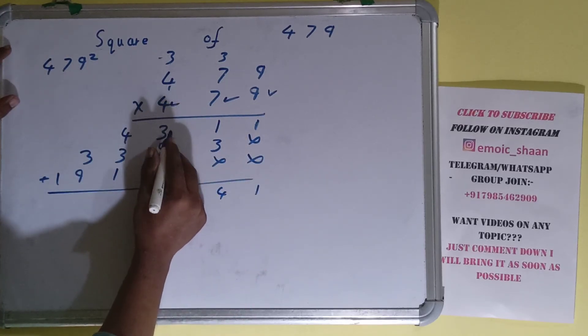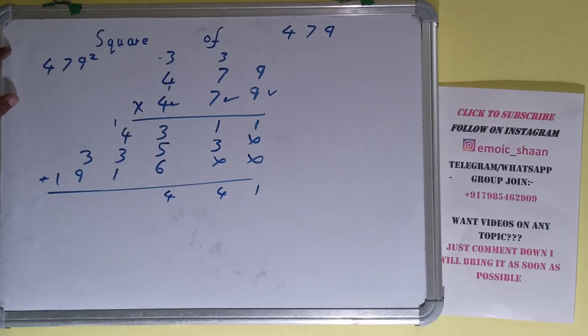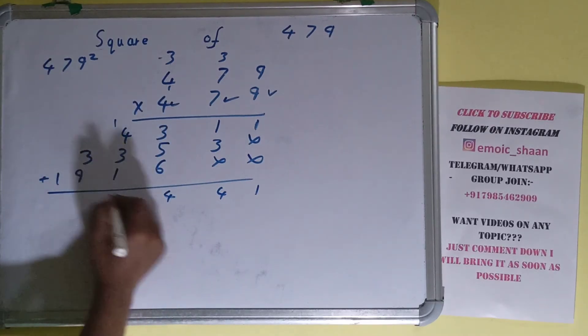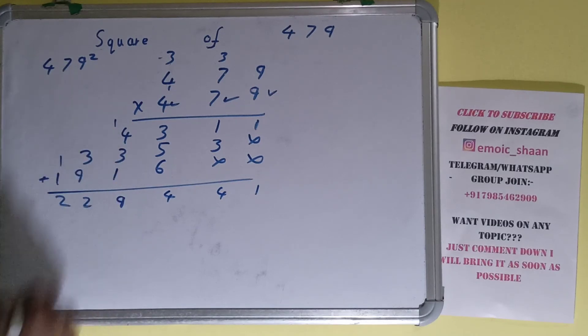6 plus 5 is 11, 1 here. 1 plus 4, 5, 6, 7, 8, 9, 2, 2. The answer is 229441. That is the square of 479.